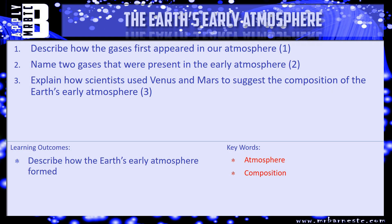If we have a look at a couple of questions — I've got three for you. First one: describe how the gases first appeared in our atmosphere, so what made our gases when the Earth cooled and became solidified? Number two: name two gases that were present in the Earth's early atmosphere — you've got four to choose from, what were the two main ones? And number three: explain how scientists use Venus and Mars to suggest the composition of the Earth's early atmosphere. That word composition means what the atmosphere is made up of.